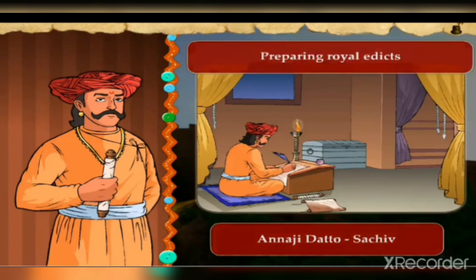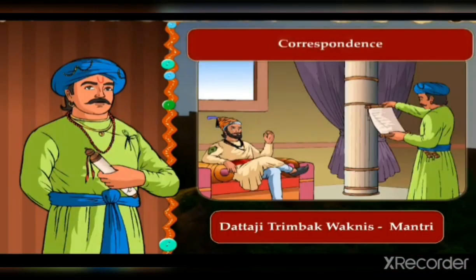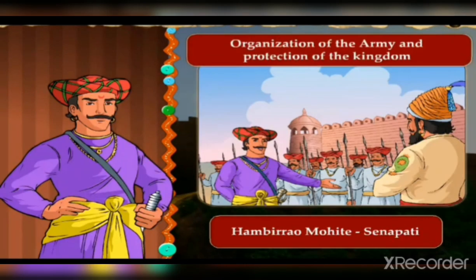Next: Anaji Datto, designation Sachiva — work: preparing royal edicts. Edicts means orders. Next: Dattaji Trimbak Waknis, designation Mantri — work: correspondence. Correspondence means letters sent from one person to another, or the activity of writing and receiving letters.